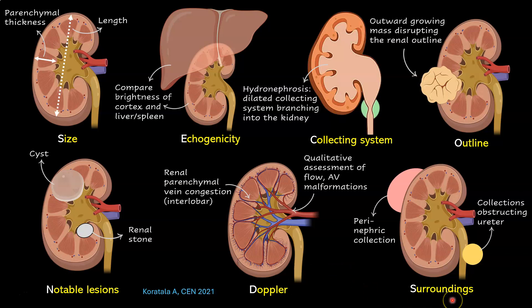The final S stands for surrounding. Whenever you are imaging the kidney, you should also pay attention to the surrounding area. Sometimes you will find ascites, or you might find blood in a case of trauma, or some extrinsic lesions compressing the ureter. For example, in a transplanted kidney, you might have lymphoceles compressing the ureter, which in turn leads to hydronephrosis.